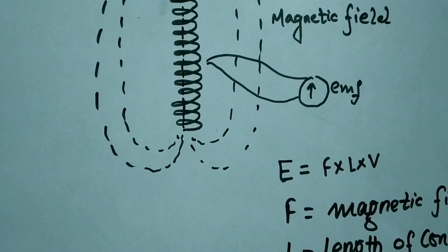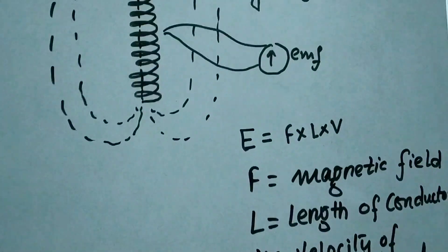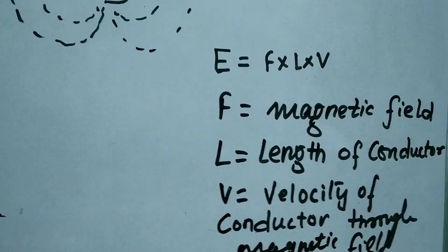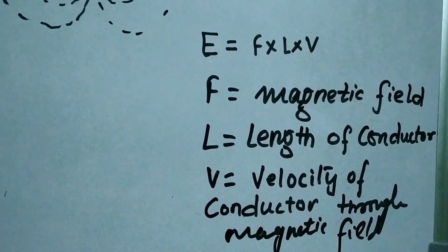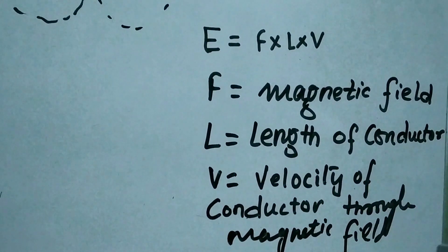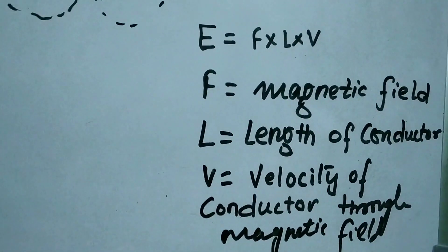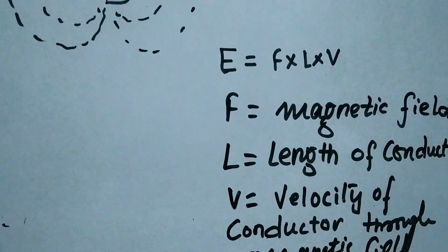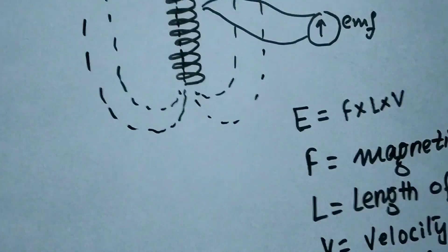This electromotive force is directly proportional to the magnetic field, length of the conductor, and the velocity of the conductor through the magnetic field. Derivation of this formula is not important for us, and I think you may know it because it was studied in class 11 and 12. Now let's go to the working of the electromagnetic log.